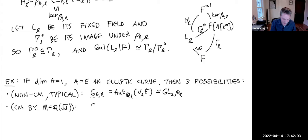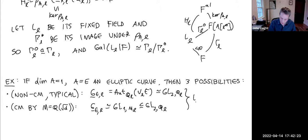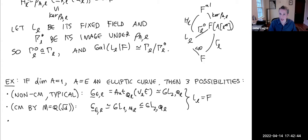In both the CM and non-CM cases, the field L_ℓ I worked so hard to define is just the ground field itself — no extension is required, and the groups are already connected. This is true for all ℓ. There's a third possibility where you don't yet have complex multiplication but obtain it after a field extension; I call this the PCM (potential CM) case.